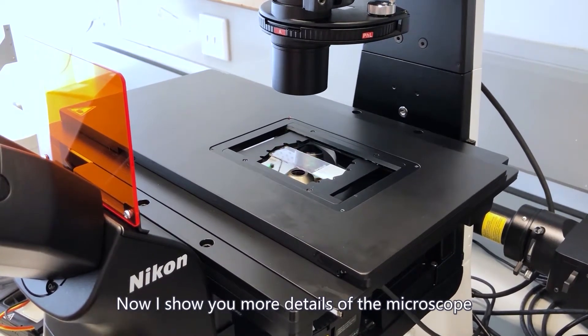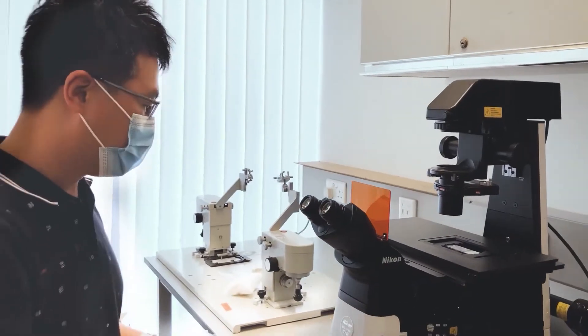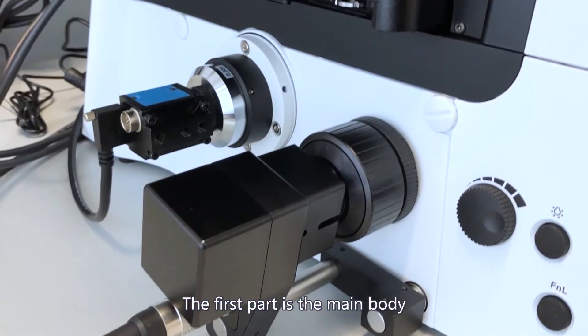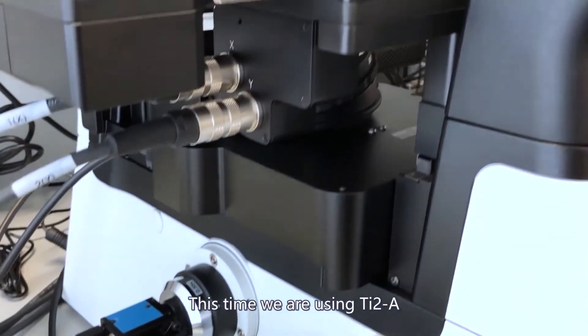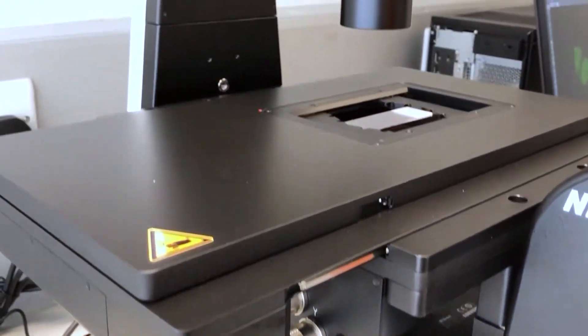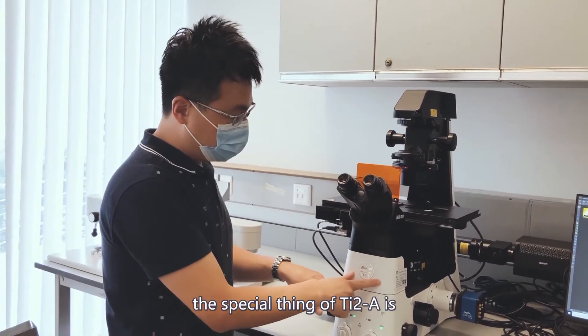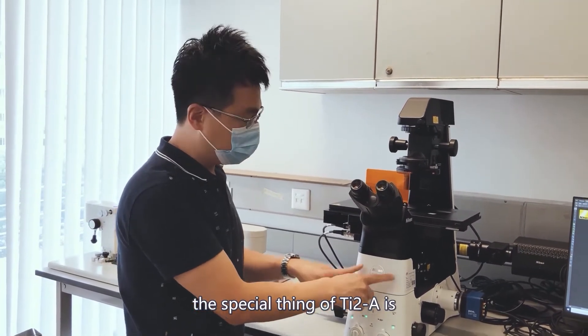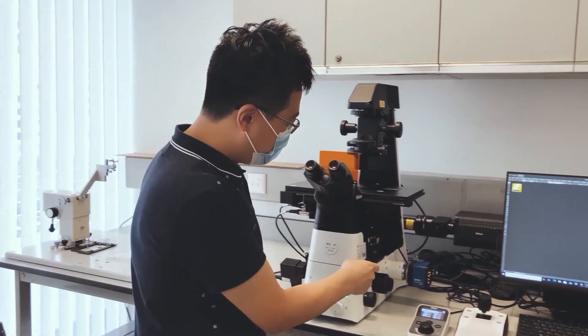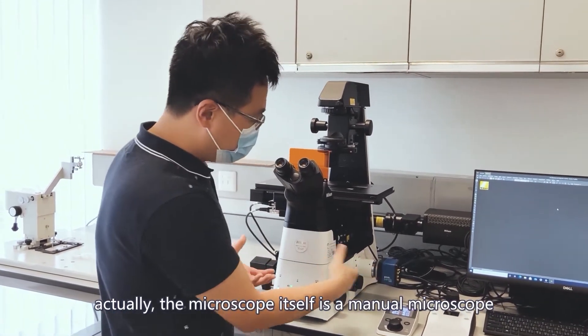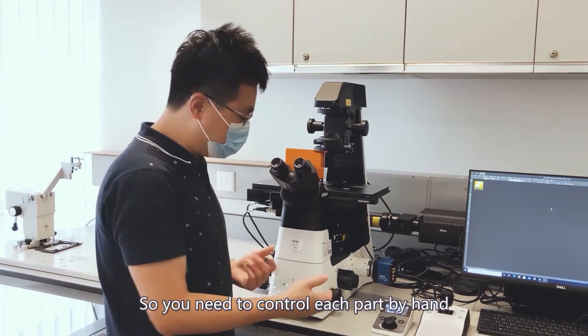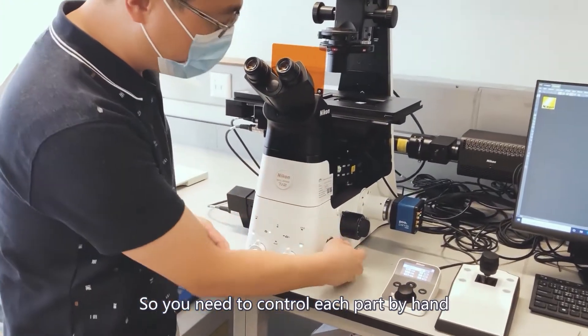So now I'll show you each part. The first part is the main body. This time we are using TI2-A, which is a middle class of TI2 microscope series from Nikon. The special thing of TI2-A is that actually the microscope itself is a manual microscope, so you need to control each part by hand.